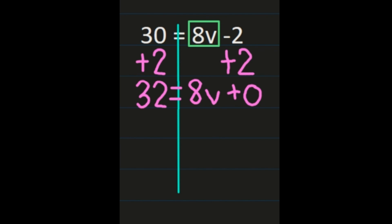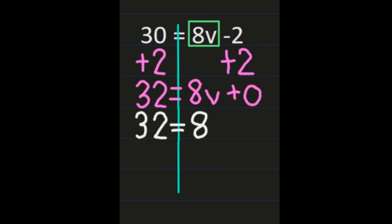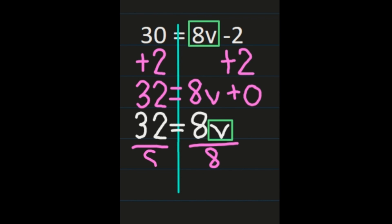Simplifying that step: the 32 stays the same on the left, and on the right 8v plus 0 equals 8v. Now we have a one-step equation: 32 equals 8v. Boxing the v, we isolate v by dividing both sides by 8. On the right, 32 divided by 8 is 4. So v equals 4. You can go and check by substituting 4 back into 30 equals 8v minus 2.